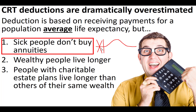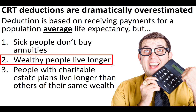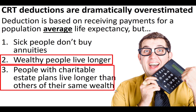Sick people don't buy annuities. People who know they're in that short-lived category don't buy annuities. That's one reason why life insurance companies do not use the same life expectancy tables for people buying life insurance as compared to people buying annuities — they know sick people don't buy annuities, so they use a much longer life expectancy for annuity purchasers. Number two: we have the reality that wealthy people live longer. And beyond that, people with charitable estate plans live longer than others of the same wealth.